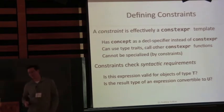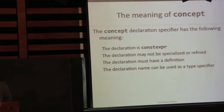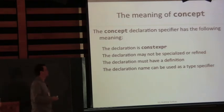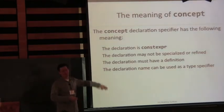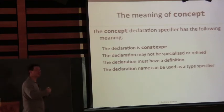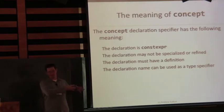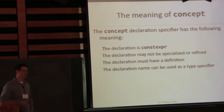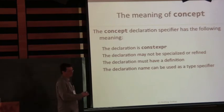What does the concept keyword actually mean? If you write concept, your declaration is automatically constexpr. We also have some other semantic restrictions — you can't specialize or refine things declared concept. We want a single definition of every concept: there's no way to partially specialize it for some types or have some constraints deal with a query differently than others. We have a single definition of a total function mapping from types to true/false. The declaration name can be used as a type specifier — this is really the requirement that got the concept keyword put into the proposal, to disambiguate the use of constraint names as types.